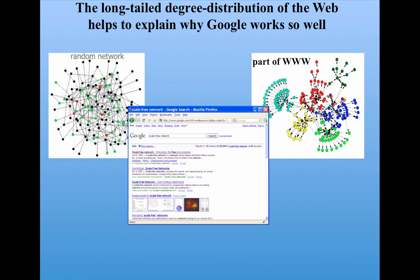The reason this works is because at every level of the network you have some pages that have many links to them and many other pages that have few links to them. So no matter what your query, Google will be able to find pages that have relatively many links to them and thus can put them high up in the list.